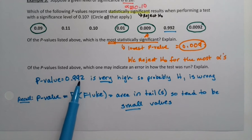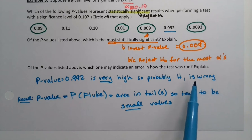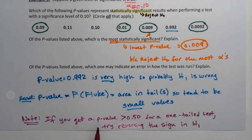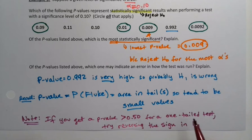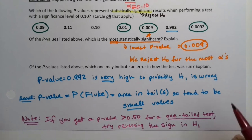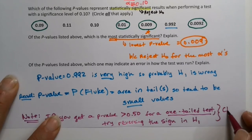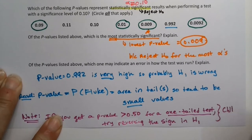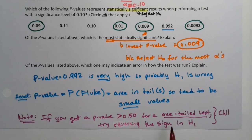The most likely culprit is that H1 is wrong — you went the wrong way. You went left-tailed instead of right-tailed, or right-tailed instead of left-tailed. That's usually the most common mistake that produces a p-value that high. So if you end up with a p-value bigger than 0.5, try switching out your H1. If you get a p-value greater than 50% for a one-tailed test, try reversing the sign in H1. If it's a two-tailed test there are other problems, but for a one-tailed test — especially in chapter 11 — try reversing your sign from less-than to greater-than, or vice versa.